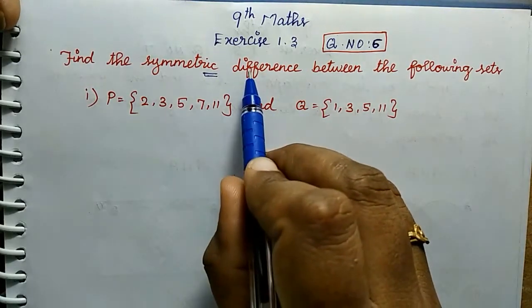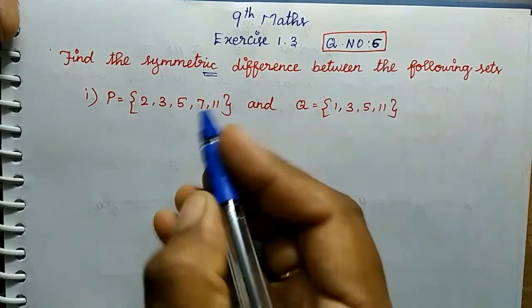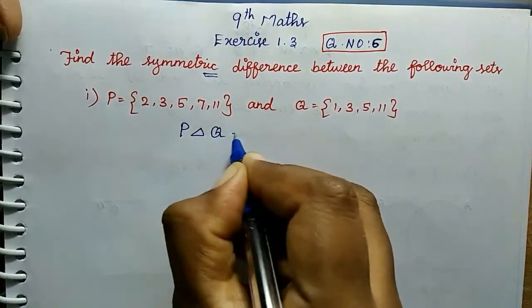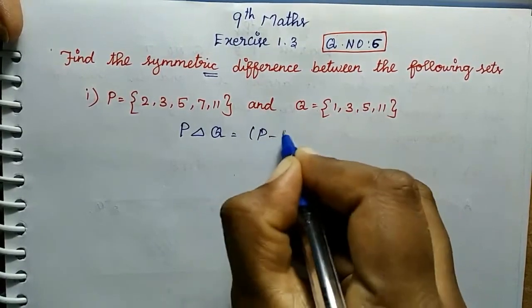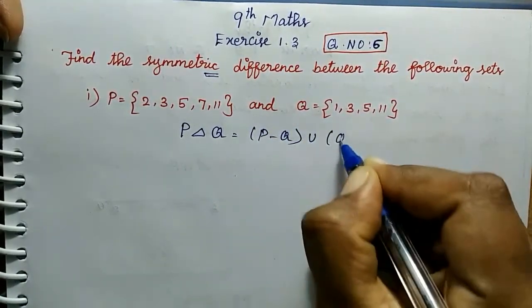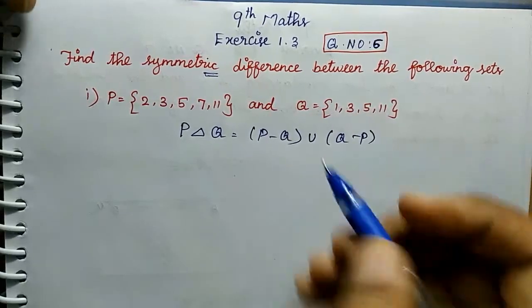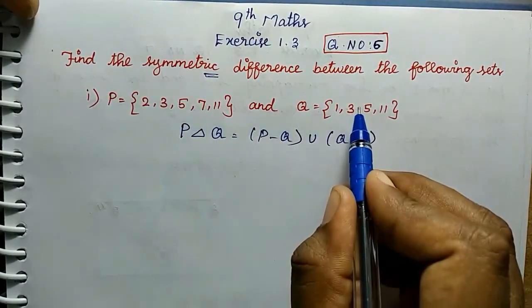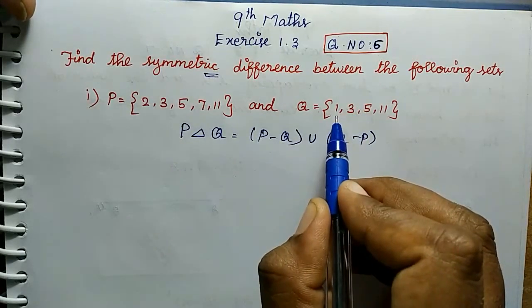Symmetrical Difference. So the formula is: P Symmetrical Q that is equal to P minus Q union Q minus P. So in the values we can find, we can apply the same. In the two sets we can find Symmetrical Difference easily.